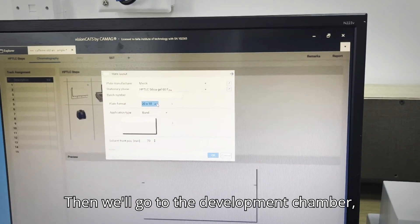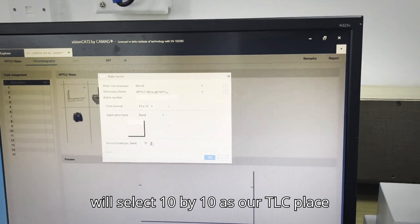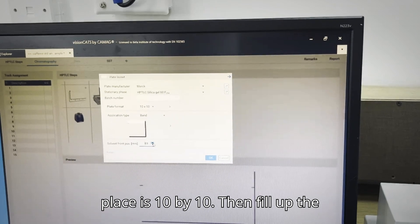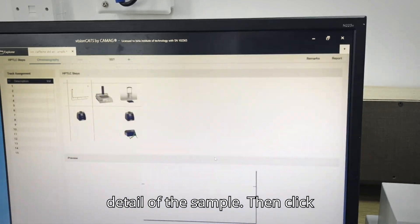Then we will go to the development chamber. We will select 10 by 10 as our TLC plate is 10 by 10. Then fill up the detail of the sample. Then click OK.